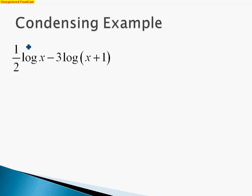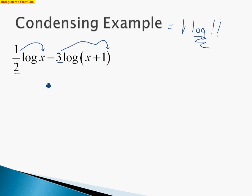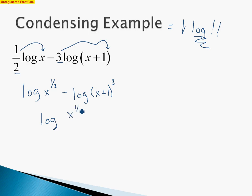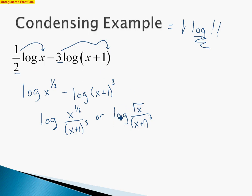Now let's condense, starting with many logarithms and working down to one log at the end. A common mistake is leaving more than one logarithm in the final answer — there should be only one. First, move all numbers in front up as powers: we get log of x to the 1/2 minus log of x plus 1 cubed. The subtraction implies division, so we have one logarithm: x to the 1/2 divided by x plus 1 cubed. That's the same as the square root of x all over x plus 1 cubed.